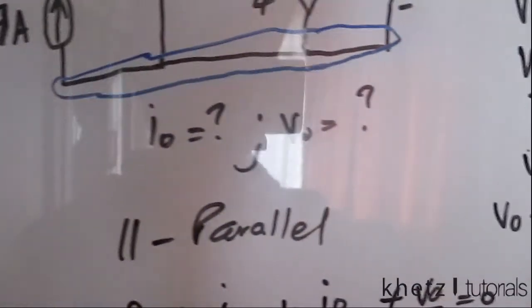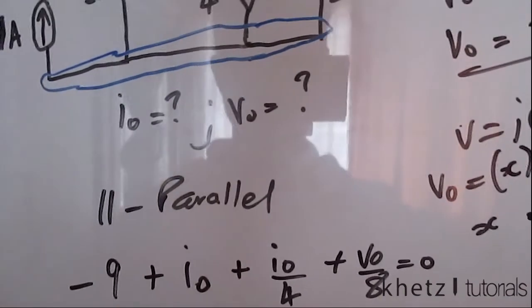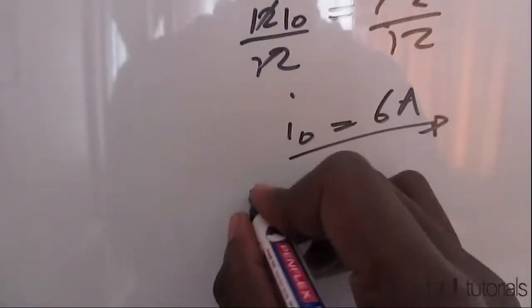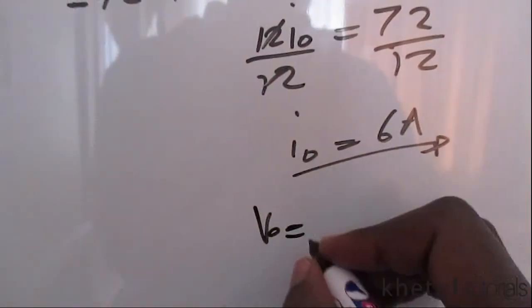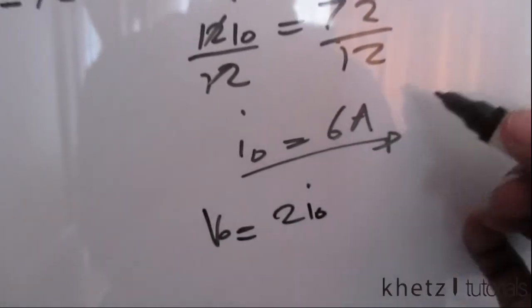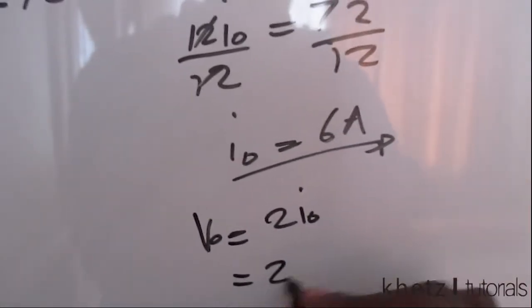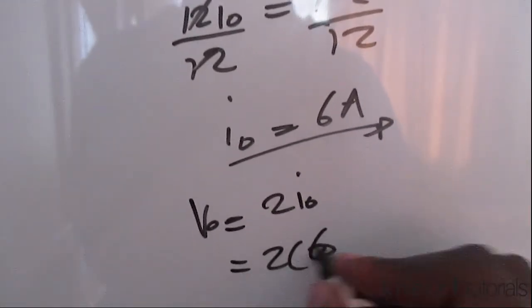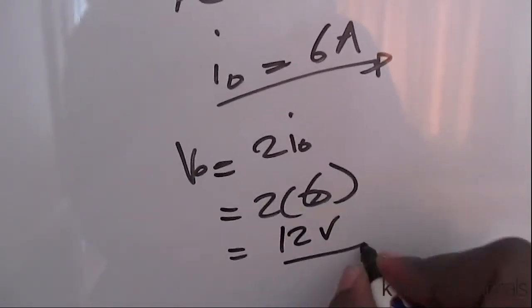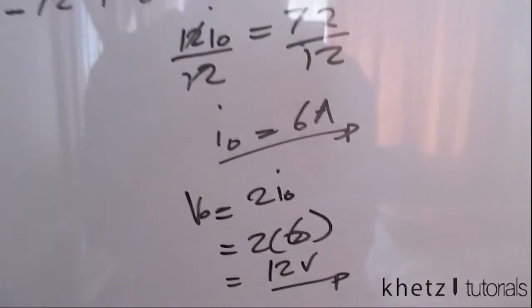Now move on to the second part which asks for v₀. We established that v₀ equals 2i₀, so substitute this value which we got. So two times six gives v₀ equals 12 volts. And that is how you solve this question.